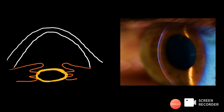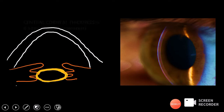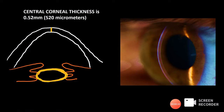This picture represents the slit lamp image of a slit section of the cornea. The slit represents an optical beam from the slit lamp; this is the anterior surface and this is the posterior surface of the cornea, and the slit represents the thickness of the cornea. The central corneal thickness is about 0.52 mm (520 micrometers), while the peripheral thickness is 0.67 mm (670 micrometers). So it is the peripheral cornea which is thicker compared to the central cornea.